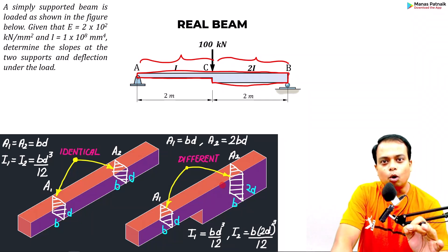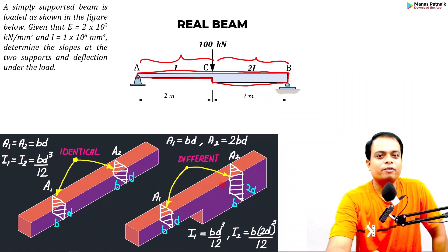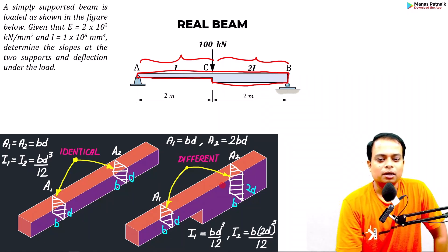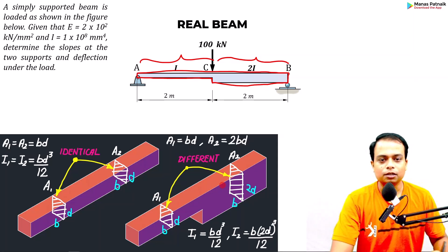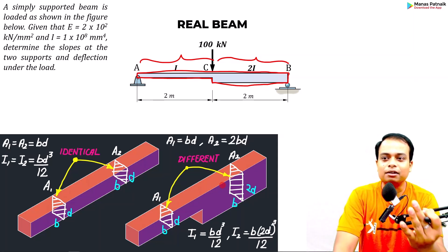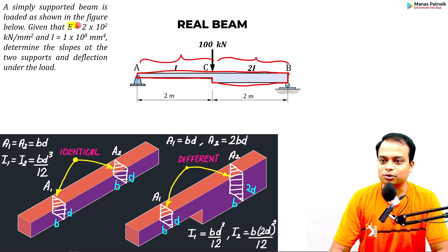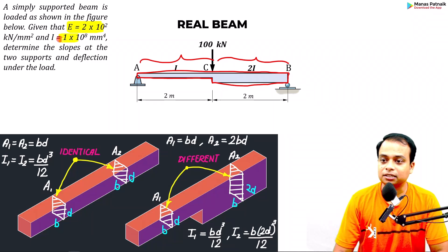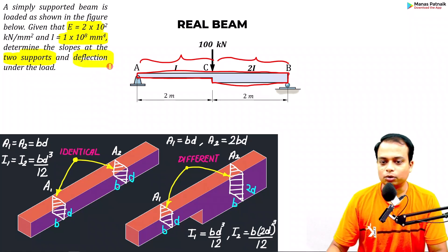I want all of you to watch this video right till the end — this is going to be finished in the next 10 minutes or so. Let's do it. The first step is to read the problem. The given values include Young's modulus at 200 GPa and the area moment of inertia. What we are supposed to calculate are the slopes at the two supports and the deflection under the load.